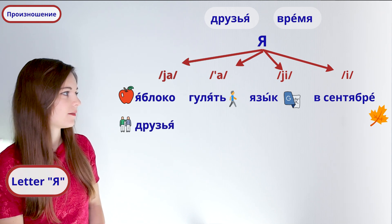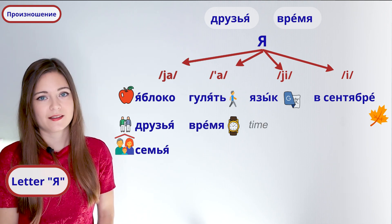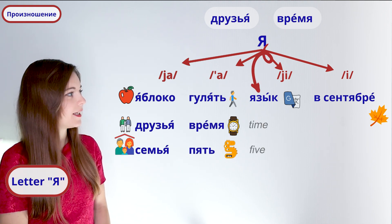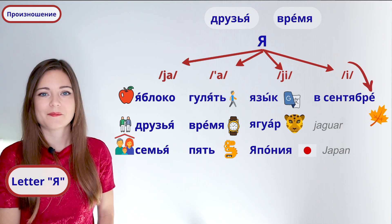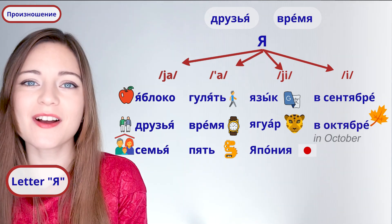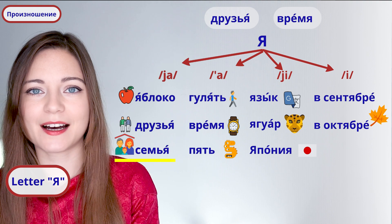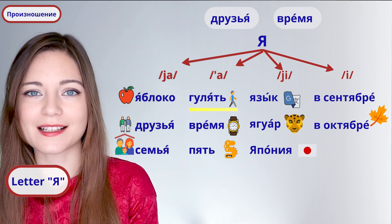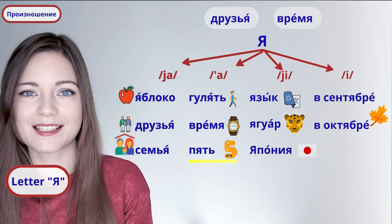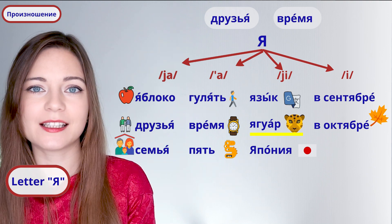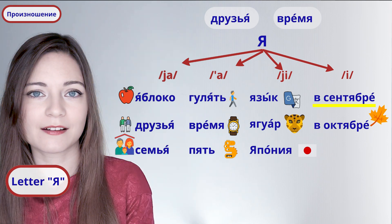Let's see some more examples. Яблоко. Друзья. Семья. Гулять. Время. Пять. Язык. Ягуар. Япония. В сентябре. В октябре. Now try to repeat these words with me: яблоко, друзья, семья, гулять, время, пять, язык, ягуар, япония, в сентябре, в октябре.